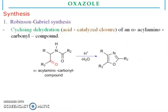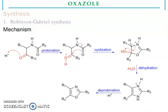Now, synthesis. First, Robinson-Gabriel synthesis: cyclizing dehydration of an alpha-acyl-o-amino-carbonyl compound. You see the mechanism — first protonation, then cyclization, then dehydration, then deprotonation, and then this is the tri-substituted oxazole ring.